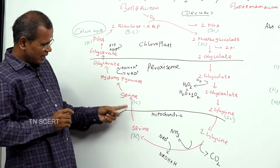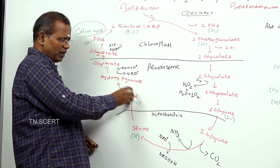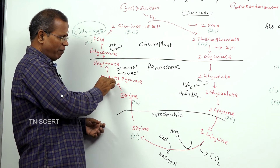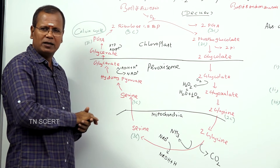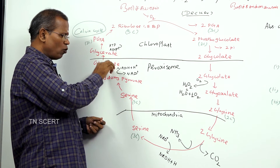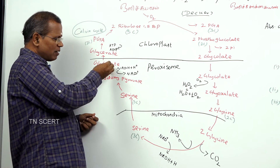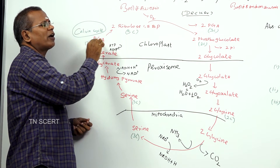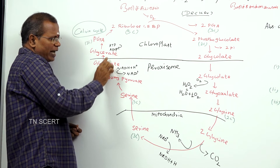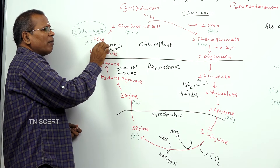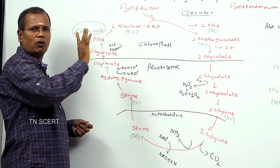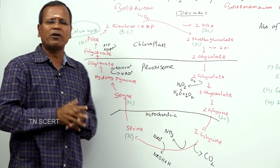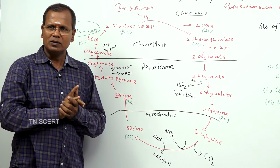Serine diffuses into the peroxisome, where it is converted into hydroxypyruvate. This hydroxypyruvate is reduced to form glycerate. This glycerate diffuses into the chloroplast, where it is phosphorylated to form phosphoglyceric acid. This phosphoglyceric acid then enters the Calvin cycle.